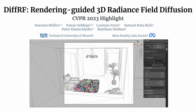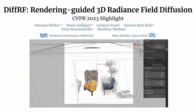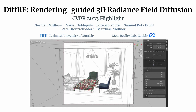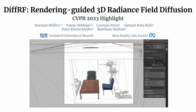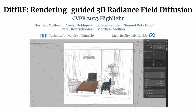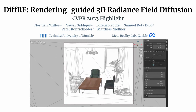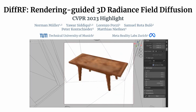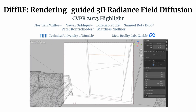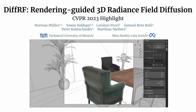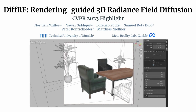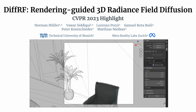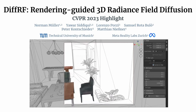We propose DIFF-RF, a novel diffusion-based approach for 3D radiance field synthesis. Our model achieves compelling rendering quality and accurate shape generation, and can be applied to tasks like asset generation or 3D editing. Since DIFF-RF can naturally be conditioned during sampling time, our method can support new tasks like radiance field completion.